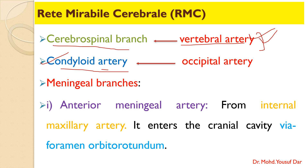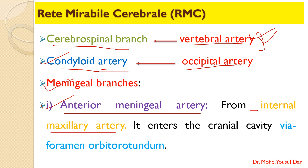The condyloid artery arises from the occipital artery. The third contributor is the meningeal branches, which are of three types: anterior, middle, and posterior meningeal arteries. The anterior meningeal artery is a collateral branch of the internal maxillary artery, and it enters the cranial cavity through the foramen orbitorotundum, where it is involved in the formation of the RMC.